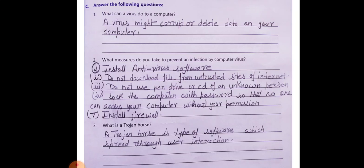Next question is question number 3, what is a trojan horse? Trojan horse is software which spreads through user interaction. When we interact through the network and internet, when we interact with users, one user interacts with another user, so trojan worm spreads.